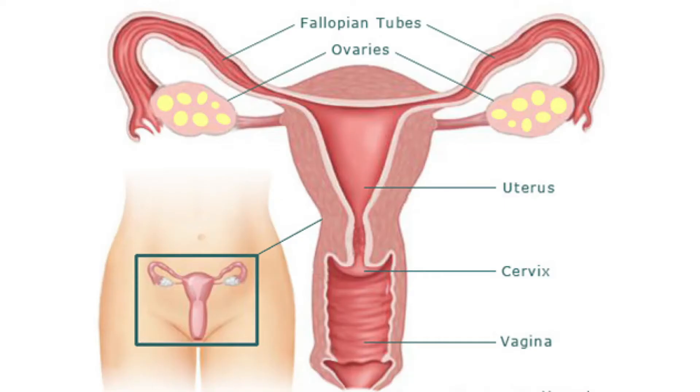Endometriosis, where tissue grows around and blocks your tubes, can also cause tubal blockage. A history of past abdominal surgeries, hydrosalpinx, or other related conditions can also be a cause. Endometriosis causes scar tissue to start growing outside your tubes and in surrounding areas, which can cause blockage. In most cases, these conditions or procedures create scar tissue that blocks the tubes.